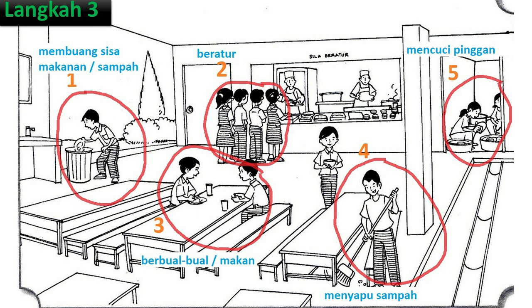Baik, langkah ketiga, kita mestilah menyatakan kata kerja mengikut nombor seperti yang kita telah labelkan pada gambar tersebut. Jadi, kita tulislah kata kerja yang mudah. Sebolehnya, kata kerja tersebut disertakan dengan objek, jika kata kerja itu ialah kata kerja transitif.